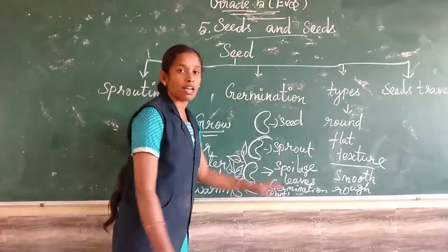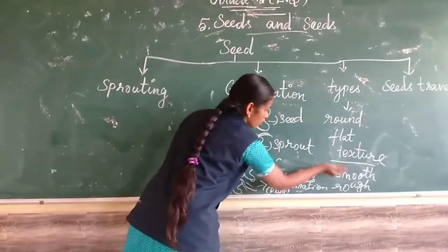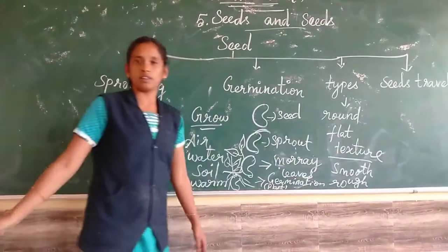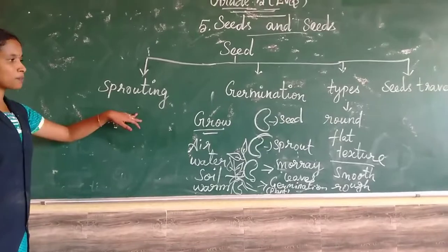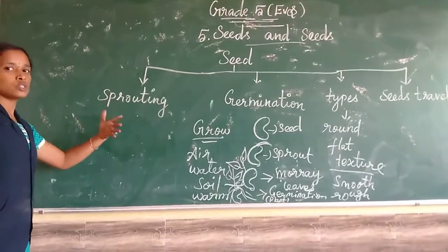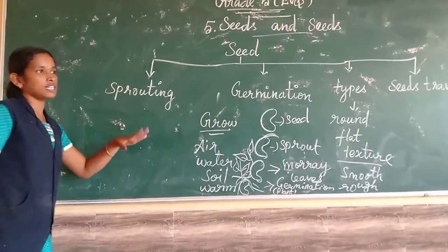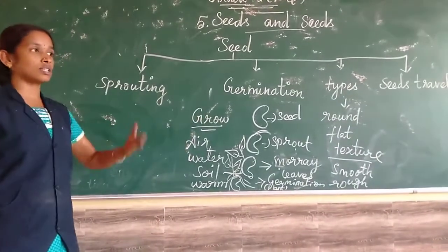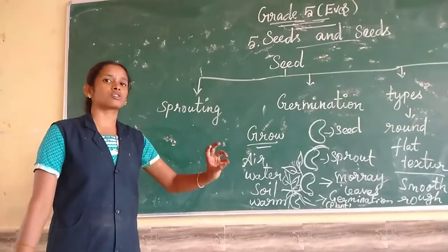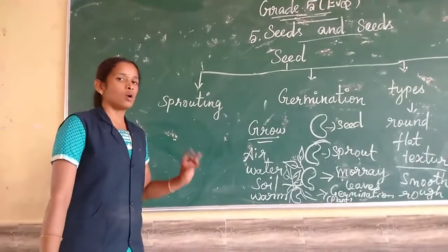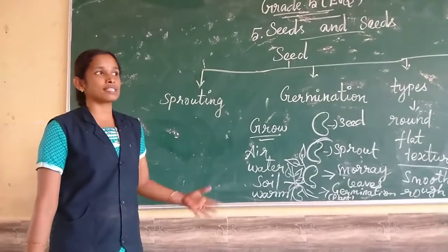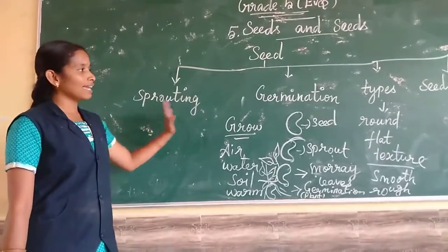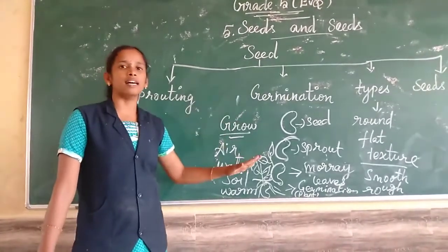We can see the seedling leaves at the same time — also called cotyledon leaves. How does sprouting happen? Using the air, the seed can move from anywhere on the ground. We need soil, warmth, air, and water. How does it keep getting water? By rain. Like that, only the seeds grow into plants.